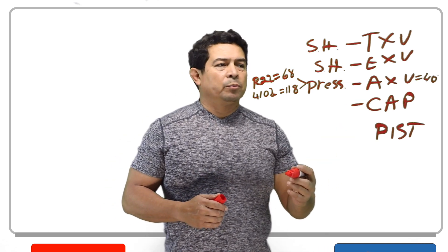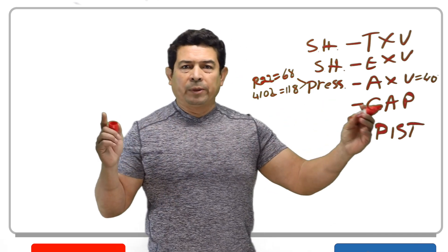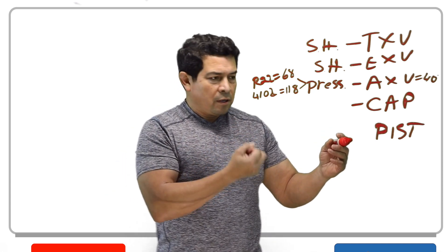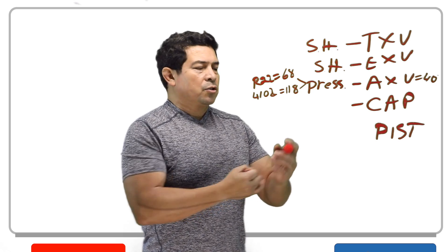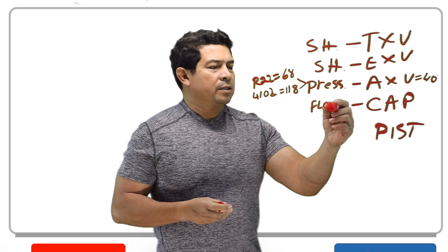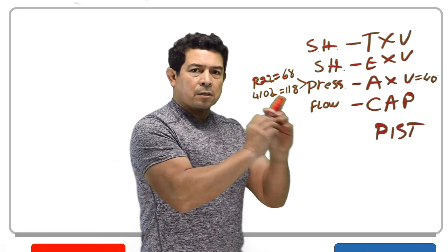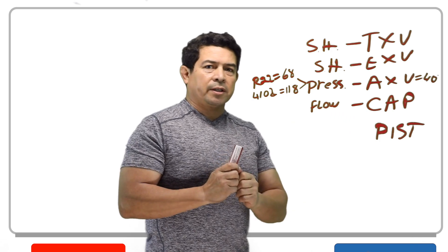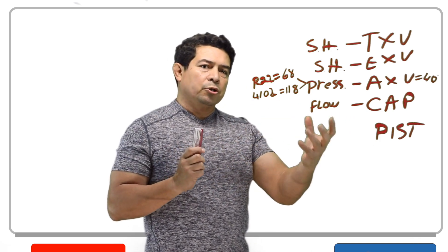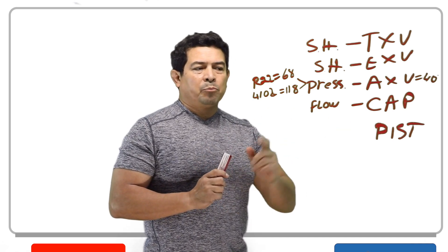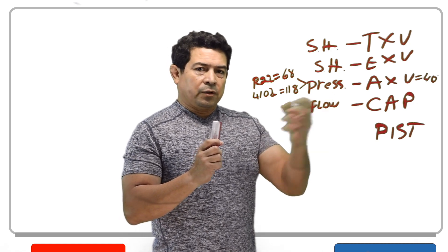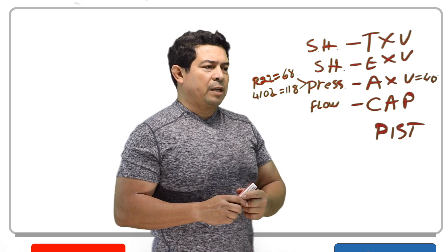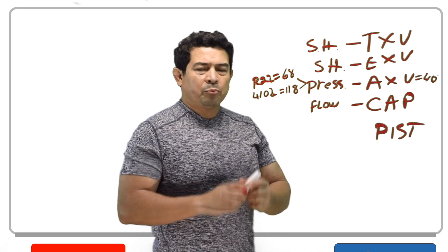The capillary tube is just a long piece of tubing. The longer it is, the more restriction it will have; the smaller the inside diameter, the greater the pressure drop. This one maintains constant flow into the evaporator, but it depends on the pressure on the high side and the low side. The higher the high-side pressure, the more flow into the evaporator; as the evaporator pressure increases, it restricts the incoming flow. They don't use it that much anymore, but there are some out there.